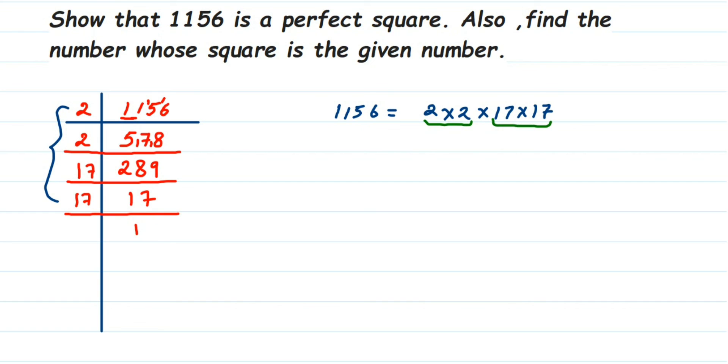Now whose square it is—that is, we're to find out the square root of the number. Square root is nothing but from each pair you take one factor. So from this I'm going to take one factor 2, and from here I'm going to take one factor 17. So 2 into 17 is 34. So 34 squared is 1156, or the square root of 1156 is 34.